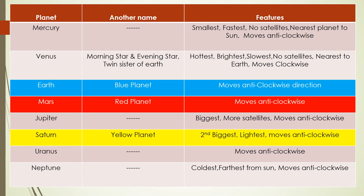Venus is also called as morning star and evening star. It is also called as twin sister of the Earth. It is the hottest, brightest and slowest planet. Like Mercury, Venus also has no satellites. It is nearest to Earth. It moves in clockwise direction — Venus is the only planet that moves clockwise. All remaining seven planets move in anti-clockwise direction. One day in Venus is equal to 244 Earth days.